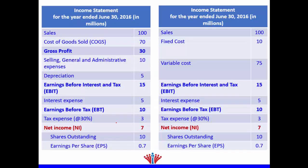Let's look at the income statement. This is a traditional income statement. We have COGS, SG&A, and depreciation. If we take sales minus COGS minus SG&A minus depreciation, it gives us EBIT. We can take these three costs together and call them operating cost, which includes fixed cost and variable cost.